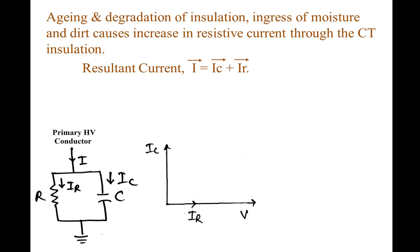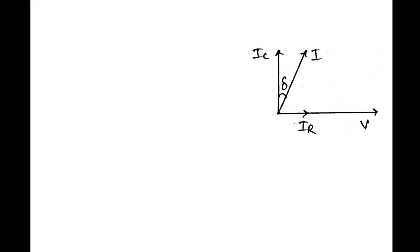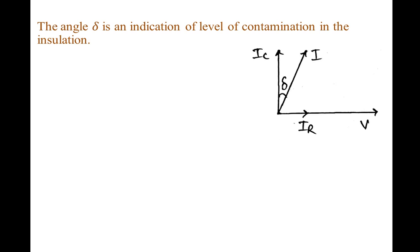The resultant current I will be equal to the vector sum of IC and IR. Therefore, the resultant phase shift between the applied voltage and total current will be less than 90 degrees. The angle between the capacitive current and the total current is called delta. The angle delta indicates the level of contamination in the insulation, and is also called as the loss angle.